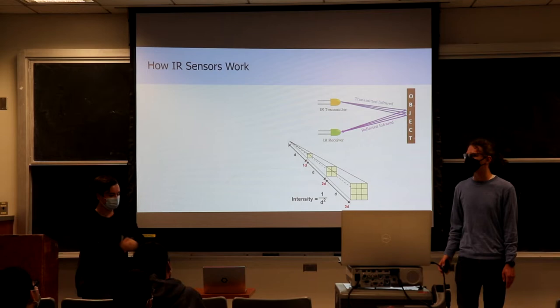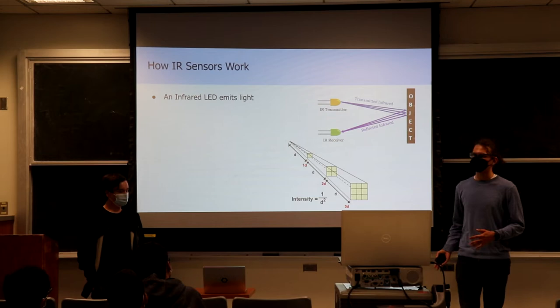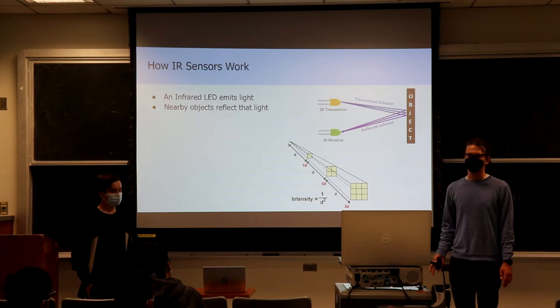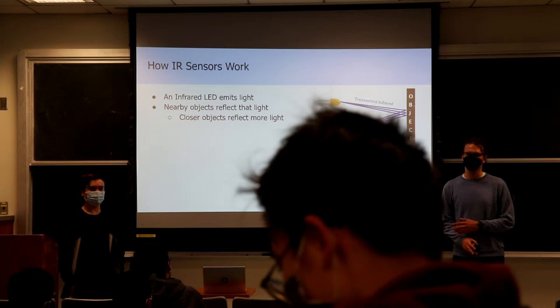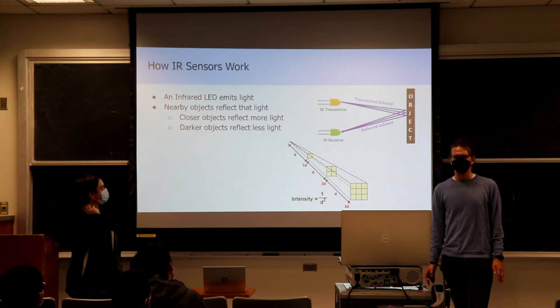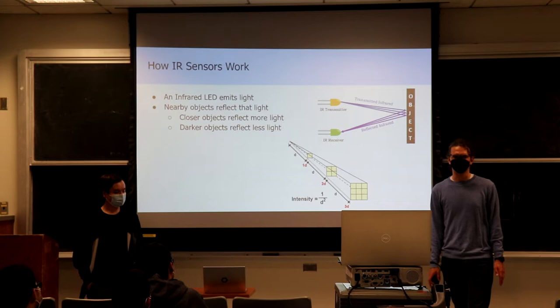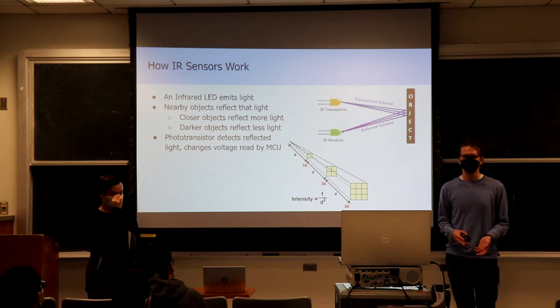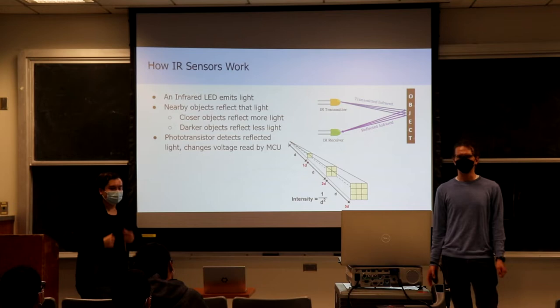IR sensors are a type of distance sensor, and they basically work as follows. An IR emitter, which is an LED, will emit some light, and then nearby objects — such as a wall in your MicroMouse maze — will reflect that light. If an object is closer, if you're closer to a wall, it's going to reflect more light. That will somewhat depend on the material. Things that are further away, or that are darker, are going to reflect less light.